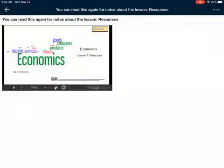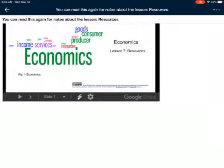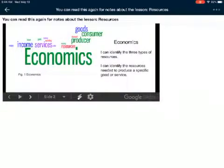I'm going to hit the next arrow here, resources. I can identify the three types of resources. I can identify the resources needed to produce a specific good or service. So I'm not going to explain too much more here, but basically a resource is something that you use to make a good or provide a service.